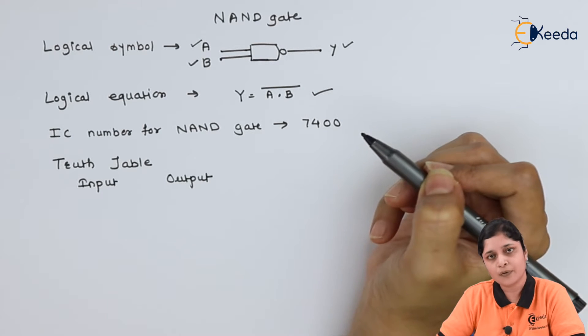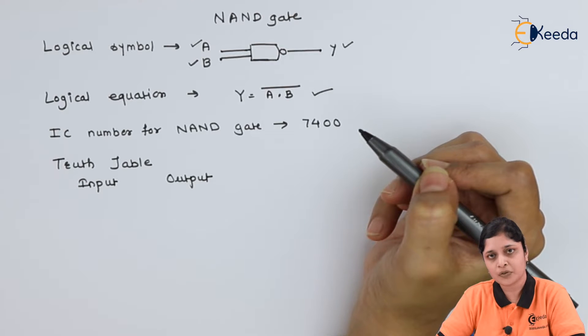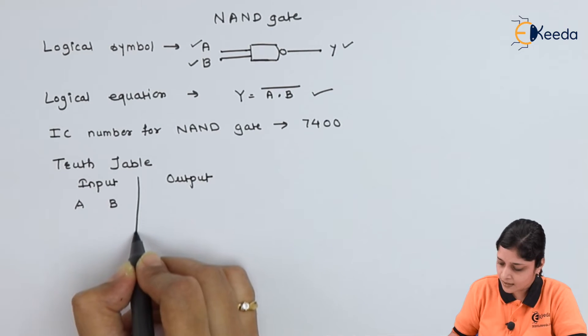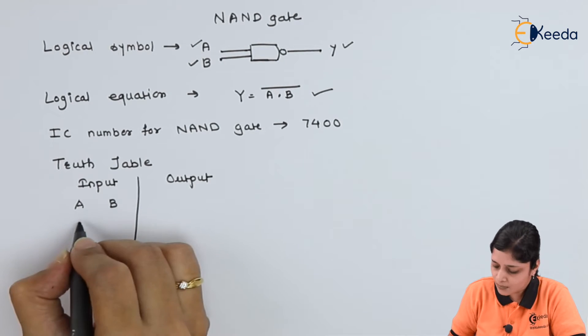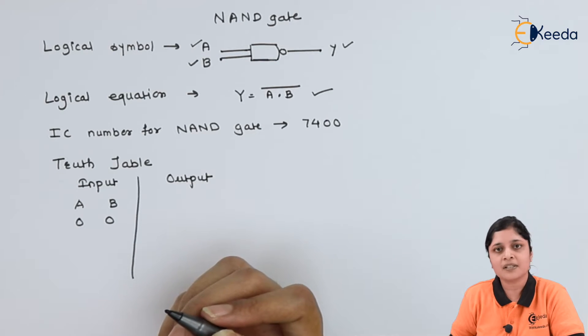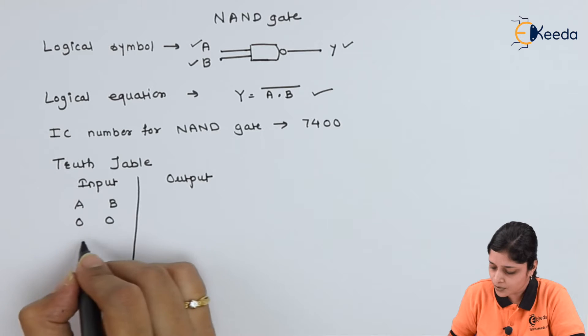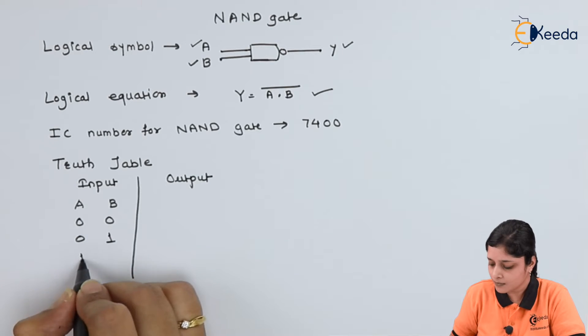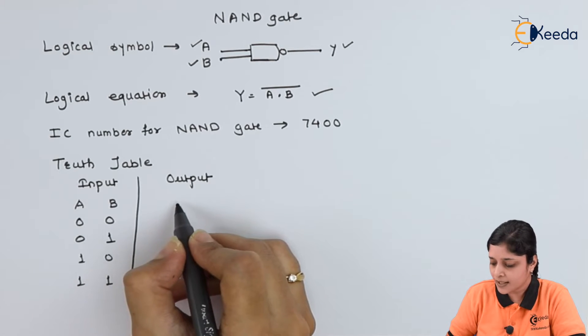In the logical equation you have to put all the possible combinations of the input to get the final output. So we will write A, B as the input side. Possible combinations will be - all the inputs are in binary form because we are discussing the digital gates. That's why all the information will be in zero and ones. So according to the two inputs, possible combinations are four: 0,0, 0,1, 1,0 and 1,1. At the output you will get complement of the AND gate or you can say A dot B bar.